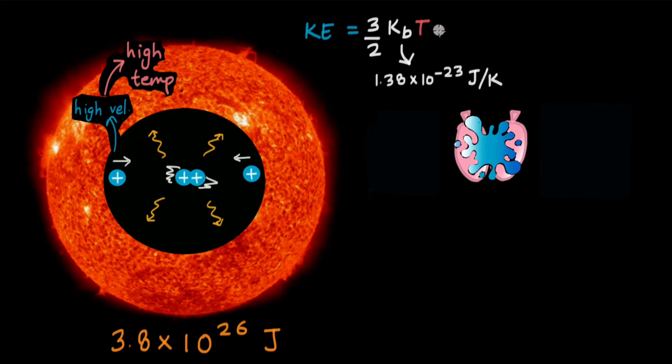We are interested in the temperature of the sun's core. So let's keep temperature on one side and bring everything else on the other side. So this is what our equation becomes. If we know the kinetic energy of the protons, then we can figure out the temperature, right?